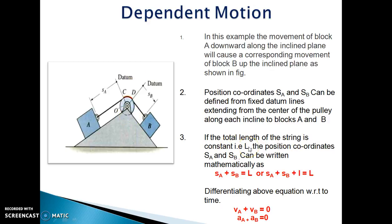If the total length of the string is constant, that is L, the position coordinates SA and SB can be written mathematically as SA plus SB equal to L, or SA plus SB plus l equal to capital L, where l is the length of the inextensible cable wrapped around the pulley, and SA and SB represent the positions of block A and block B.